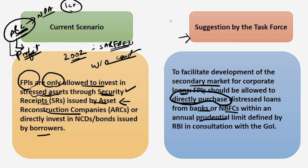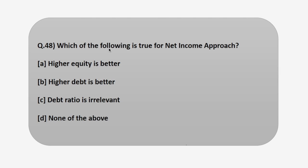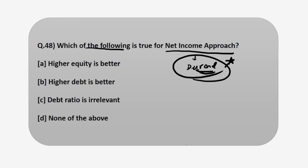Now, moving on to the next question for today. The question says: which of the following is true for the net income approach? You must have read the capital structure theories including the net income approach, net operating income approach, and traditional approach. This net income approach is suggested by Durand — you must remember this name. Let's discuss what the net income approach is in order to answer this question.